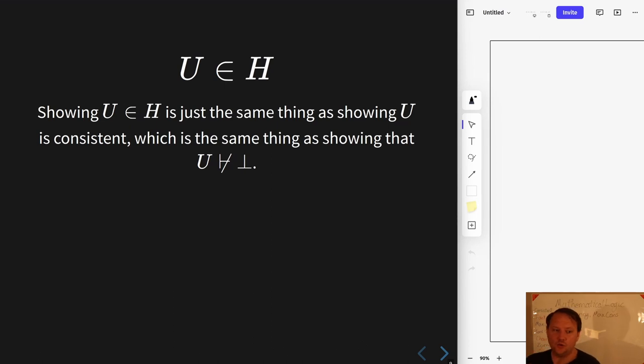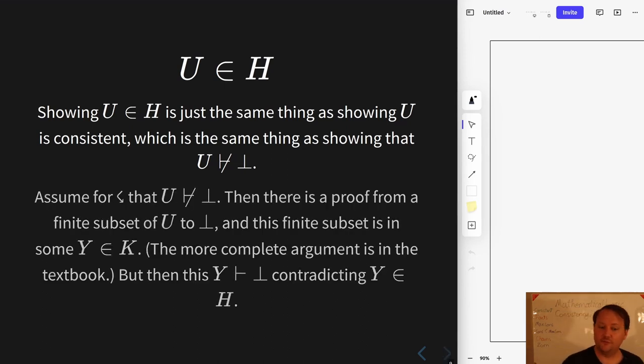The thing that deserves a little bit more work is proving that U is itself an element of H. So how to show that U is an element of H? Well, recall H is the set of all consistent supersets. So really, the only challenge here is to prove that U is consistent, which is the same thing as showing that it does not prove falsom.